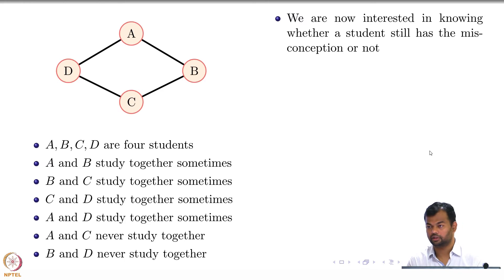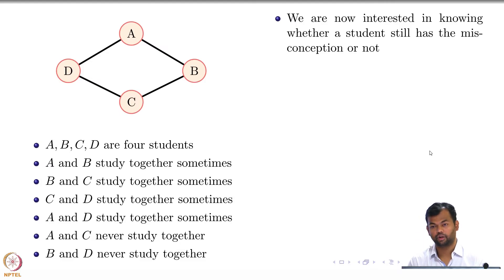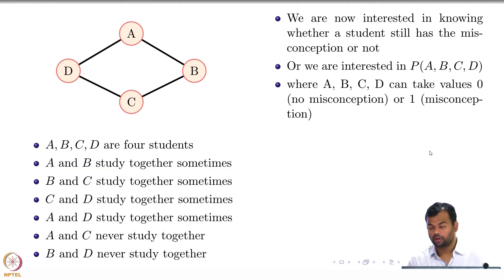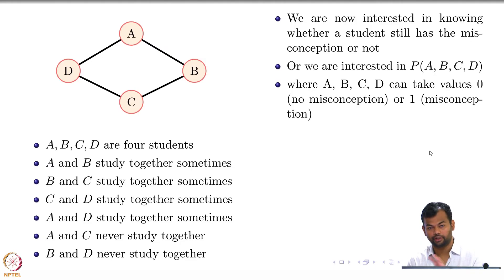What is the joint distribution that I am interested in? P(A, B, C, D) — that is the joint distribution that I am interested in. A, B, C, D can take on values 0 for no misconception and 1 for misconception — so 1 means there is a misconception.